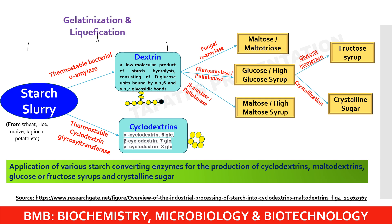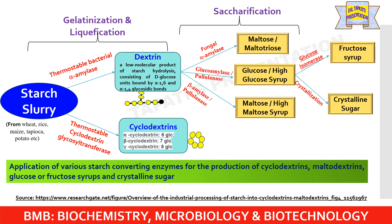The major steps in food industry processing are gelatinization, liquefaction, and saccharification. Thermostable bacterial alpha-amylase converts starch slurry to dextrins during liquefaction. Thermostable cyclodextrin glycosyltransferase produces cyclodextrins from starch slurry. Fungal alpha-amylase produces maltose and maltotriose. Glucoamylase or pullulanase produces glucose or high-glucose syrup. High-maltose syrup is produced by beta-amylase and pullulanase. Finally, fructose corn syrup is produced by glucose isomerase, and crystallization yields crystalline sugar.